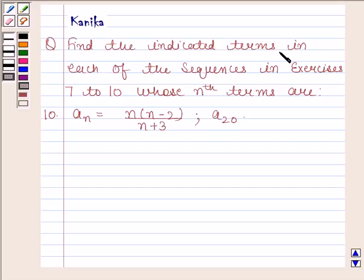The question says find the indicated terms in each of the sequences in exercises 7 to 10 whose nth terms are. Part 10 is a_n is equal to n into n minus 2 upon n plus 3 and we have to find a_20. Let us now begin with the solution.